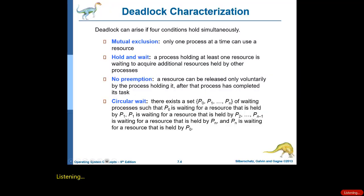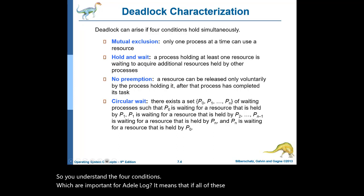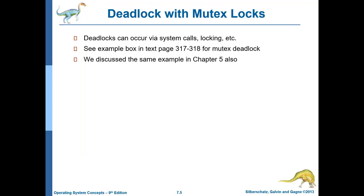We understand the four conditions which are important for a deadlock — if all four conditions are held at the same time, it will create a deadlock. Mutex locks are mutual exclusion locks, which means if any process gets access to a lock, no other process can use it. The process uses that lock to enter a critical section, finishes its task, and then when it comes out into the exit section, it releases the lock. That is the basic concept of mutex locks studied in chapter 5 on synchronization.